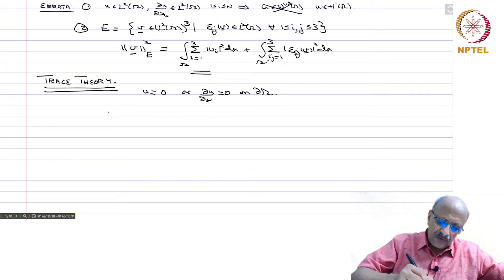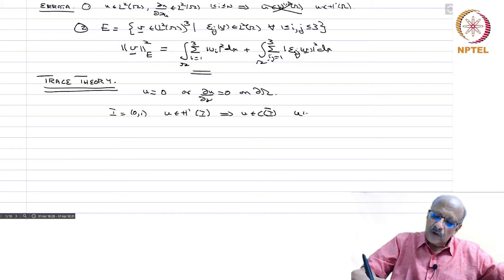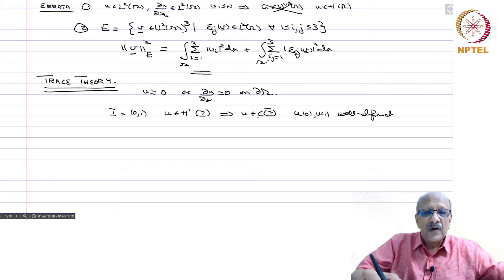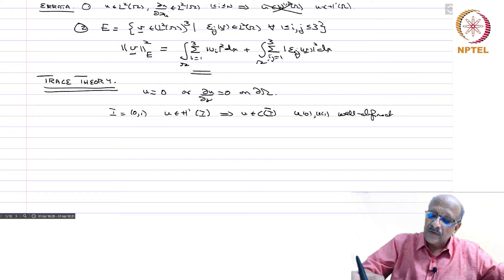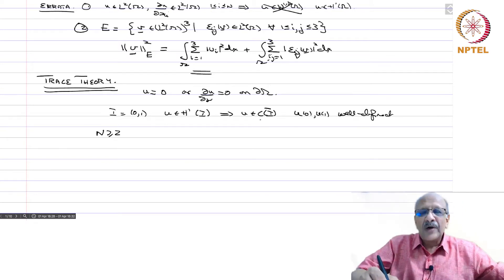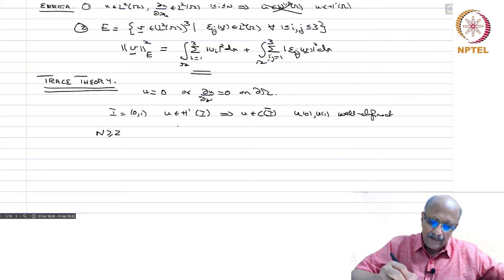If i equals 0, 1 and if u is in h1 of i for instance or w1 p of i, then this implies that u belongs to c of i bar. Therefore, u0, u1 are well defined. And if you are in higher order Sobolev spaces like h m, then u will be in the space of continuously differentiable or more functions. So successive derivatives of u at the boundary points are also well defined. Now if you are in higher dimensions, say n greater equal to 2, then you do not always have this. In order to have this continuity inclusion into the space of continuous or differentiable functions, you need to go to very high order Sobolev spaces, m bigger than n by p as you know. And if you are in h1 etc., it may not always be true.